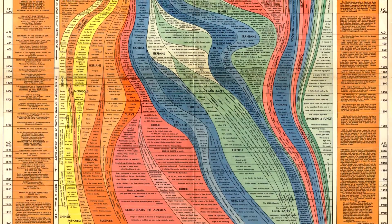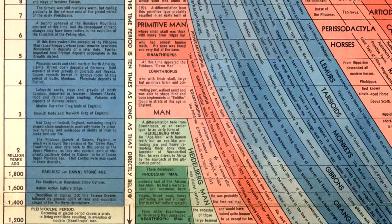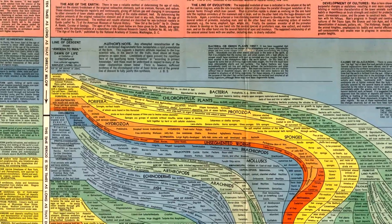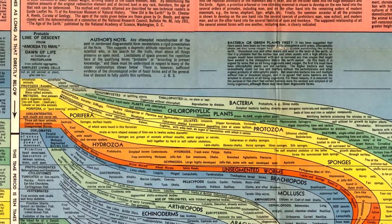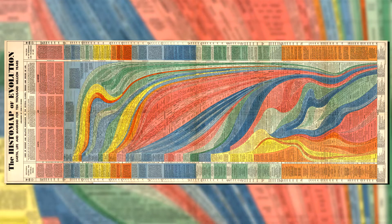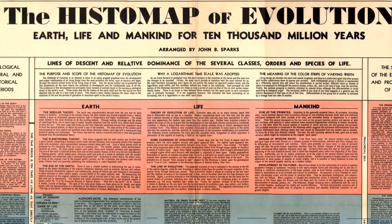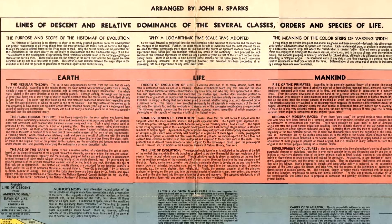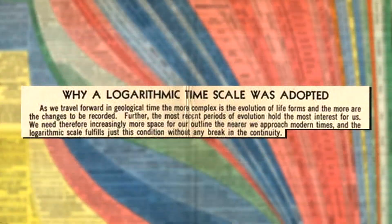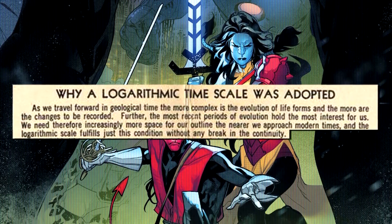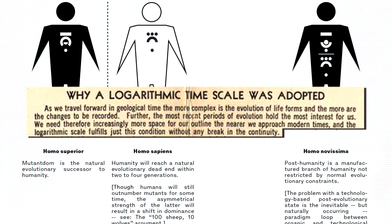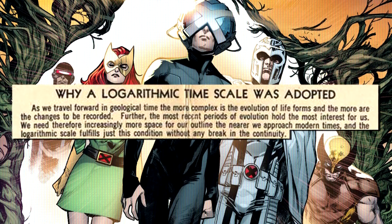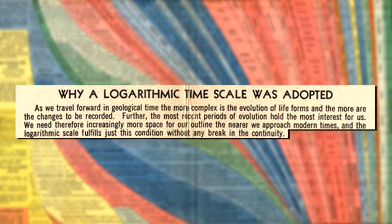This is the HistoMap — a graphic illustrating the evolutionary change and flux of most every creature native to Earth, from as far back as biologists could accurately speculate during the year 1963. It's evident that Sparks cared a lot about this project, and even reading his excerpts at the top of this multi-page graphic captures both his passion for this lens towards history and his understanding of why this change in perspective matters. In his own words: 'As we travel forward in geological time, the more complex is the evolution of life forms, and the more are the changes to be recorded. Further, the more recent periods of evolution hold the most interest to us. We need, therefore, increasingly more space for our hourline the nearer we approach modern times. And the logarithmic scale fulfills just this condition without any break in the continuity.'